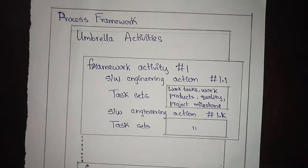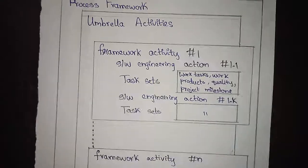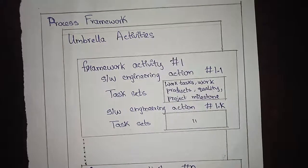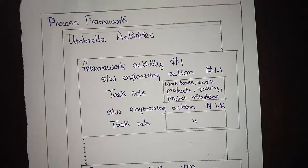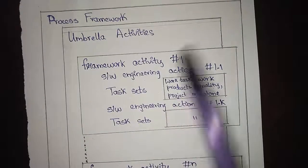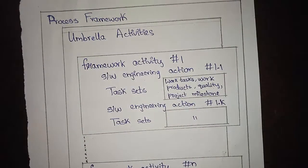It is very important to keep this in mind before starting development. The process framework encompasses a set of umbrella activities. An umbrella activity is a collection of framework activities — a certain set of tasks which have to be performed based on an engineering action. For example, a framework activity might be to write code for a header section.